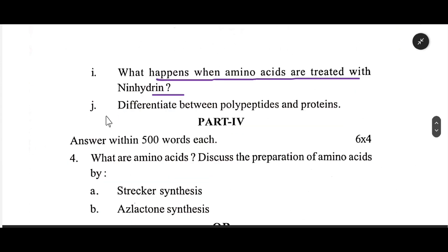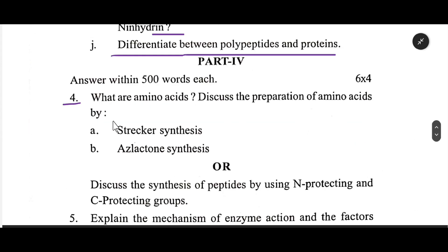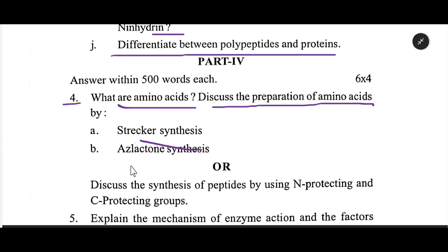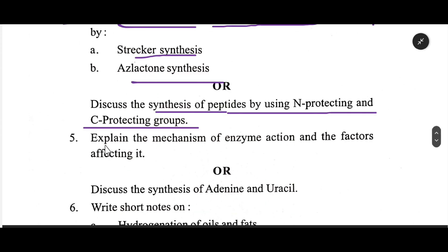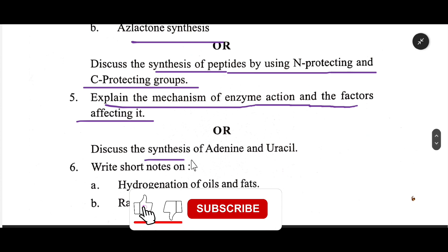Differentiate between polypeptide and protein. Number four: what are amino acids? Discuss the preparation of amino acids by Strecker synthesis and azlactone synthesis. Discuss the synthesis of peptides using N-protecting and C-protecting groups. Explain the mechanisms of enzyme action and the factors affecting it. Discuss the synthesis of adenine and uracil.